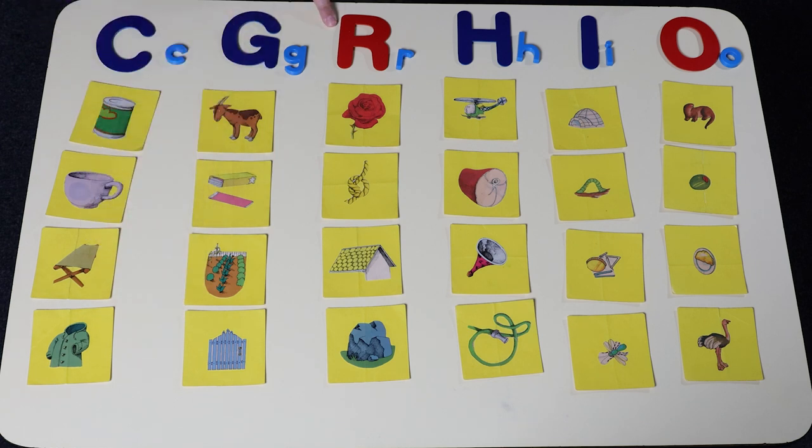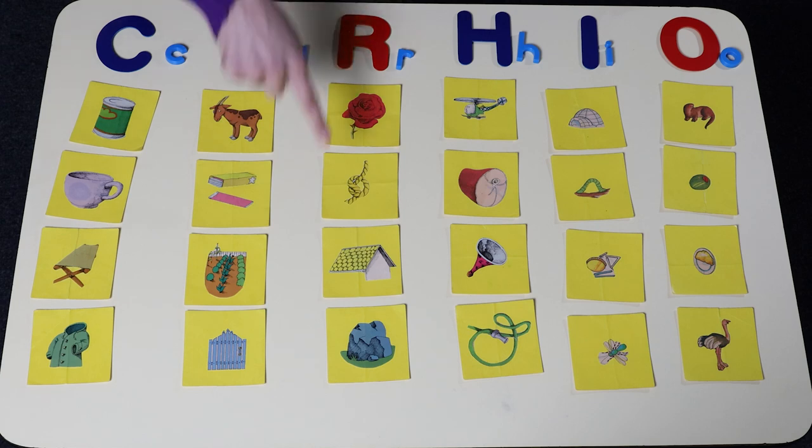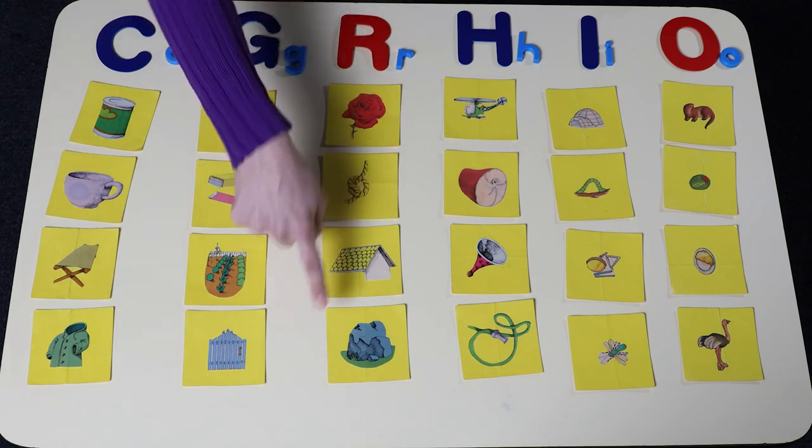The name of this letter is R. The sound it makes is R, R. Rose, R, rope, R, roof, R, rock.